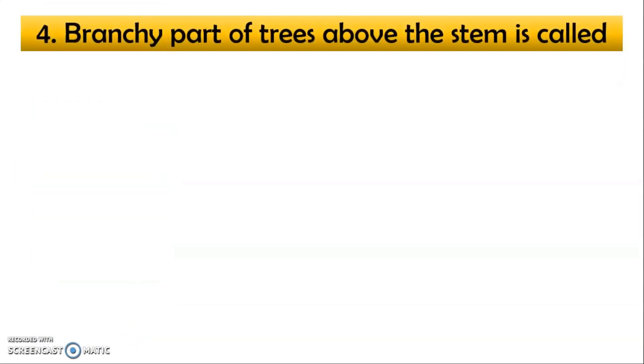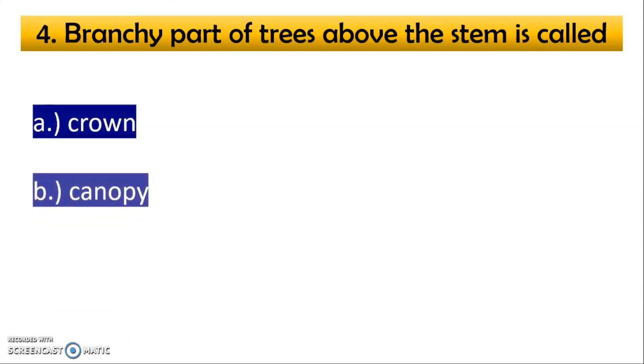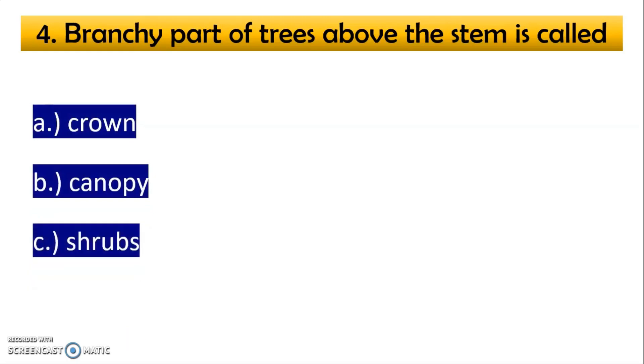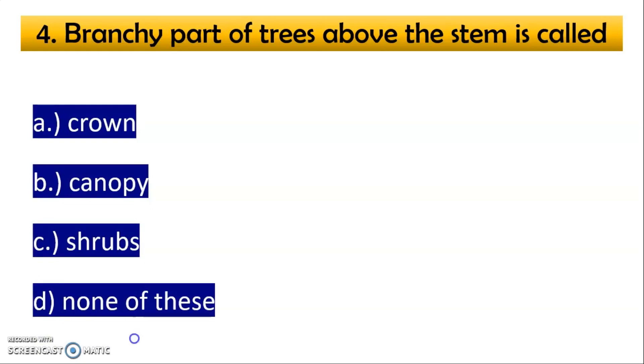Now fourth question, branchy part of the trees above the stem is called A option crown, B option canopy, C option shrubs and D option none of these. So correct option number is option number A, crown.